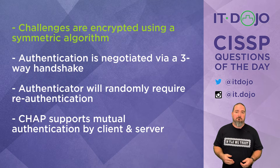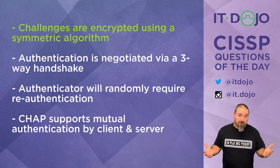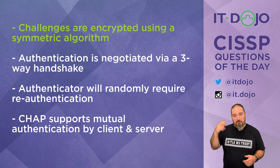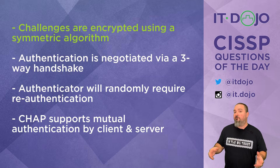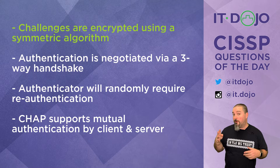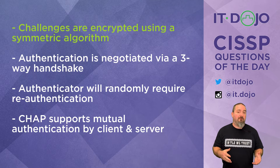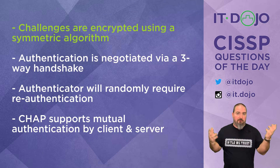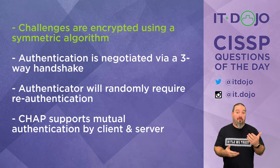Let's look at the other choices. Choice number two says that authentication is negotiated via a three-way handshake — that's correct. Sometimes people see 'three-way handshake' and their brains go to TCP, but CHAP also has a three-way handshake. In CHAP it's: a challenge, a response, and then an accept or reject — that's the three-way handshake in CHAP.